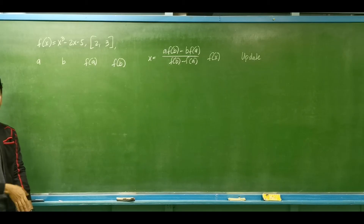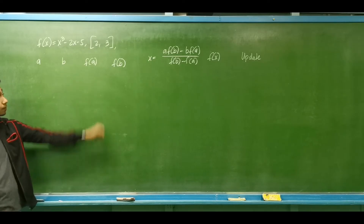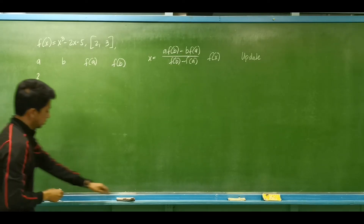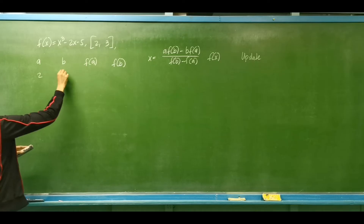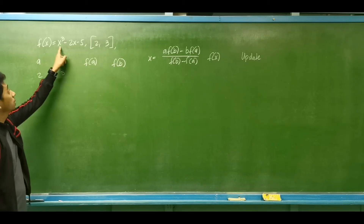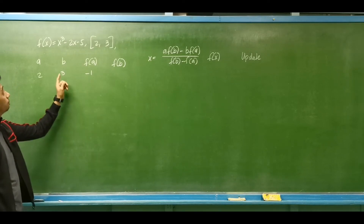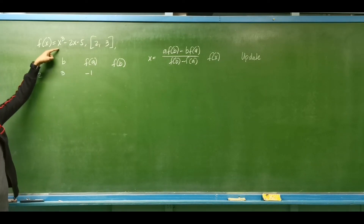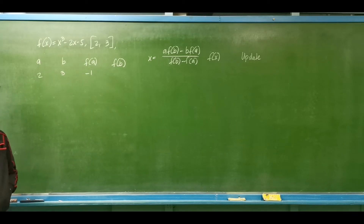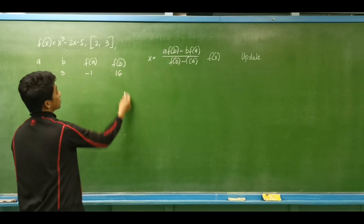For our example, we have the function f(x) = x³ minus 2x minus 5, with interval [2, 3]. Our initial lower limit A is 2 and upper limit B is 3. Computing F(A): 2³ minus 2(2) minus 5 equals 8 minus 4 minus 5 equals negative 1. Computing F(B): 3³ minus 2(3) minus 5 equals 27 minus 6 minus 5 equals 16.